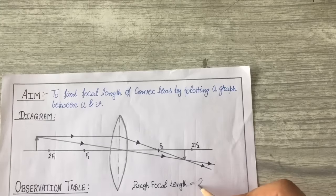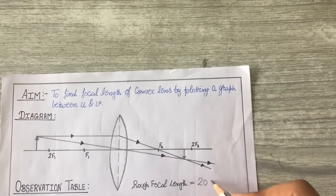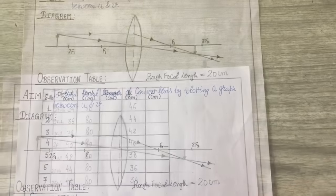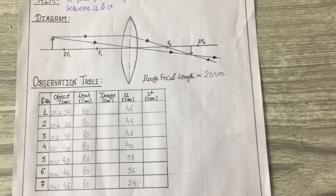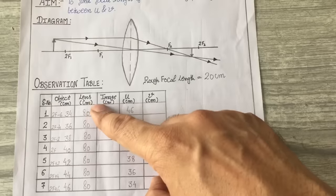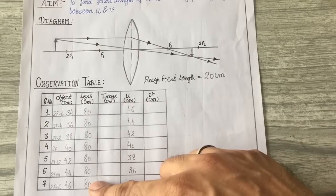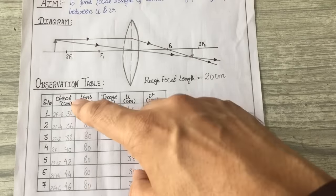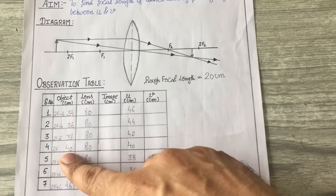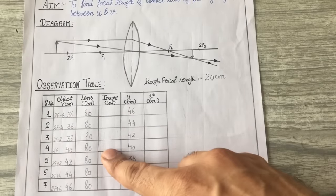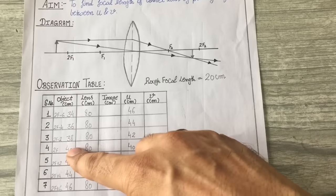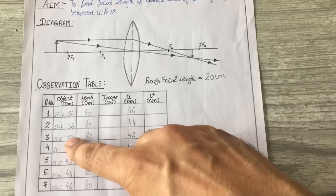Our first part of the observation table is done — the rough focal length is 20 cm. Now let's start the next part. Here is our observation table; we need the object position, lens position, image position, and then the object distance and image distance. I have fixed the lens position at 80 cm.